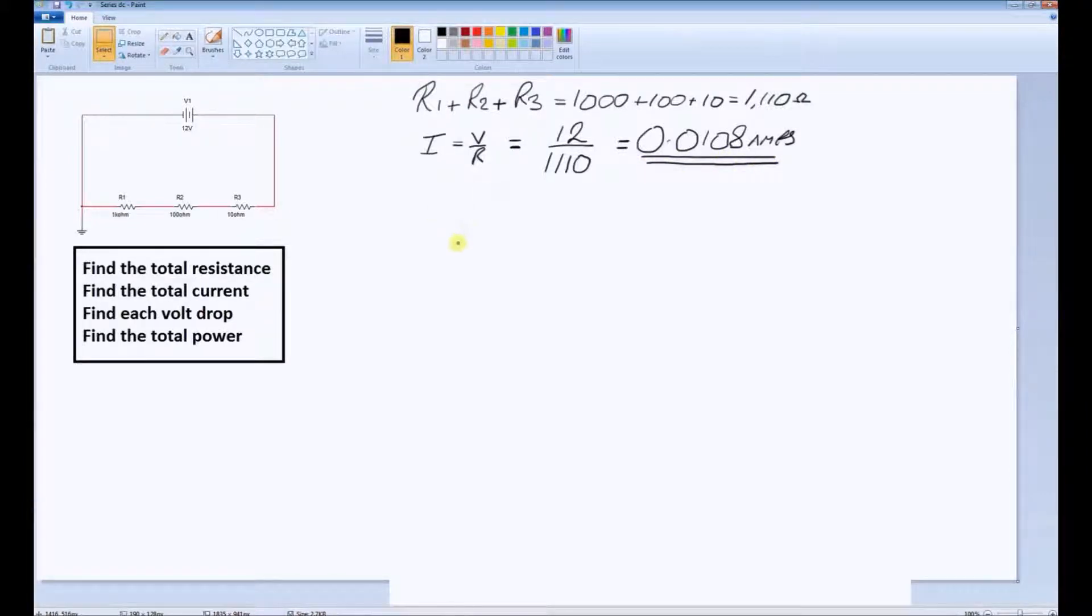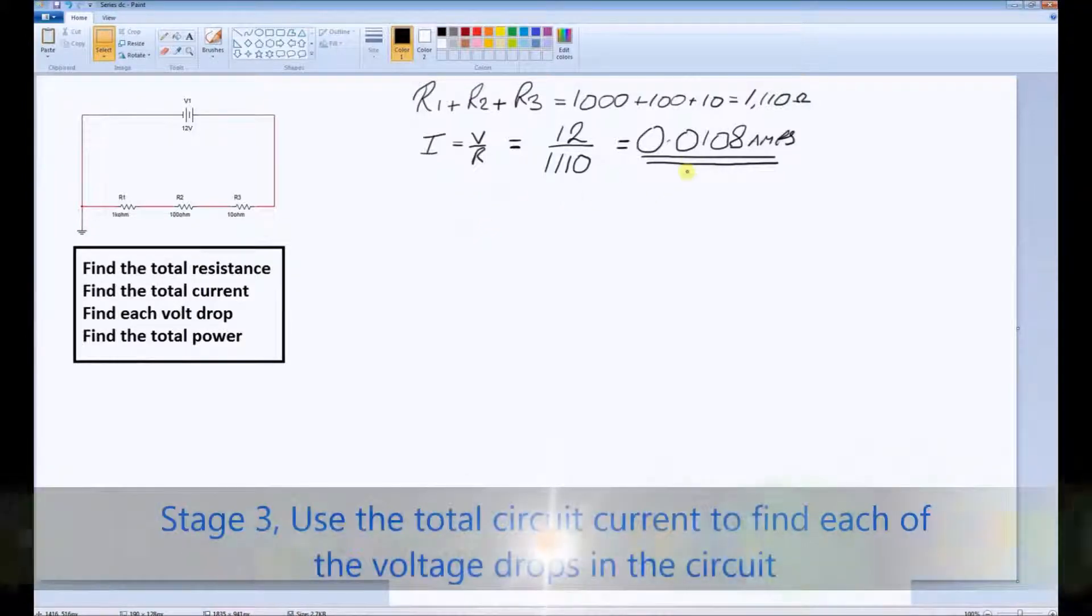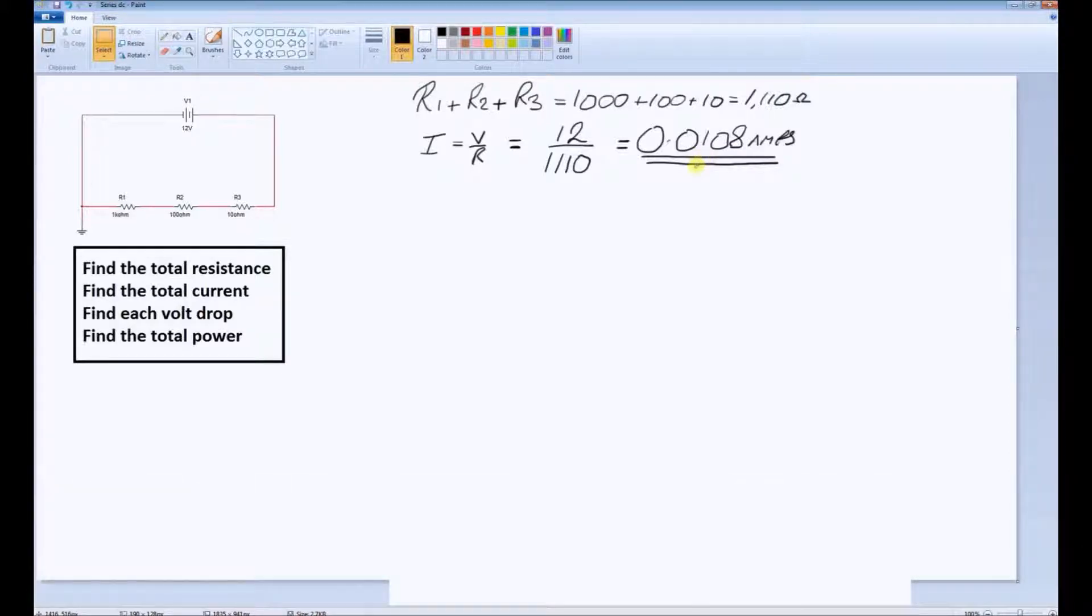The volt drop across each resistor will take the current, which is a constant in this circuit, and multiply it by each resistance in turn to find each volt drop.